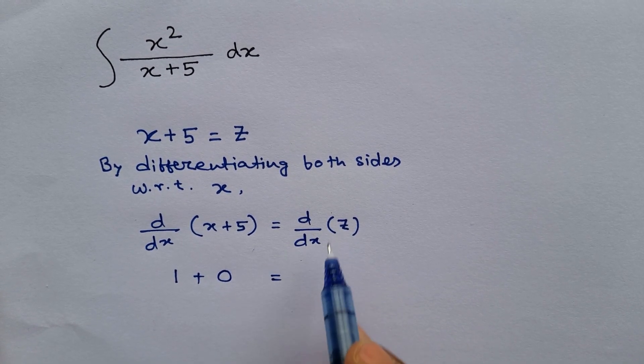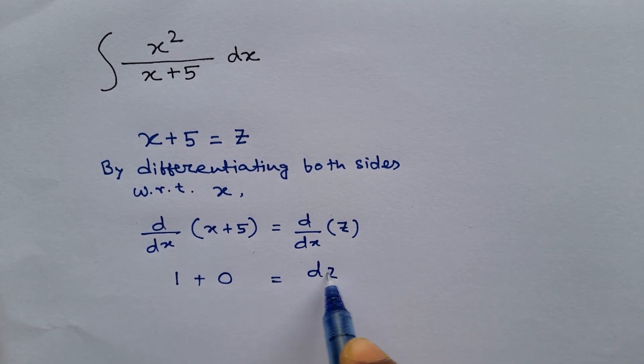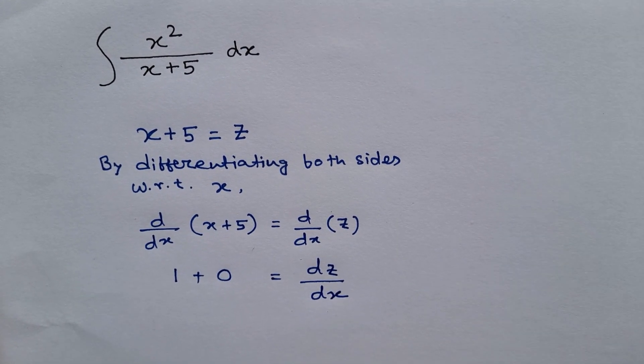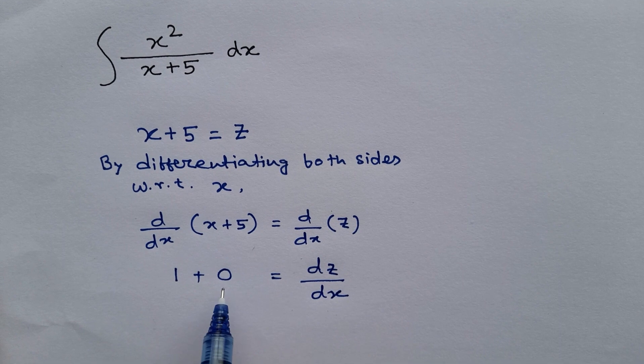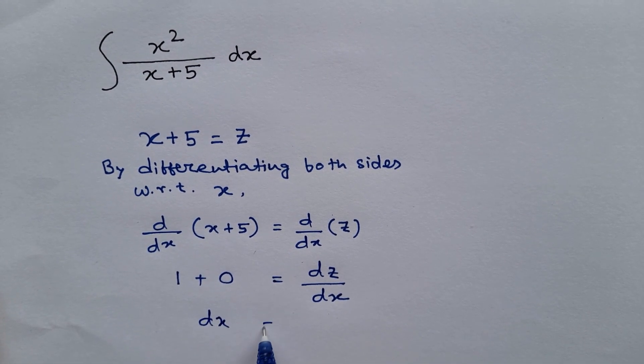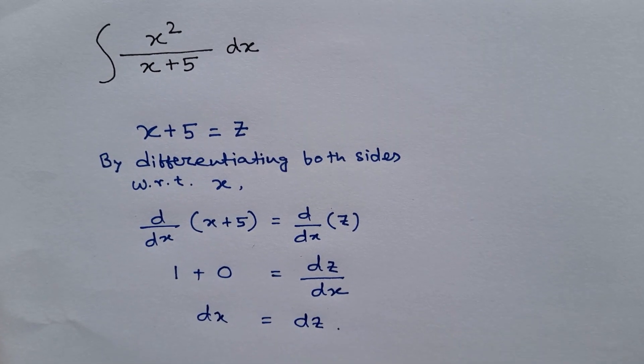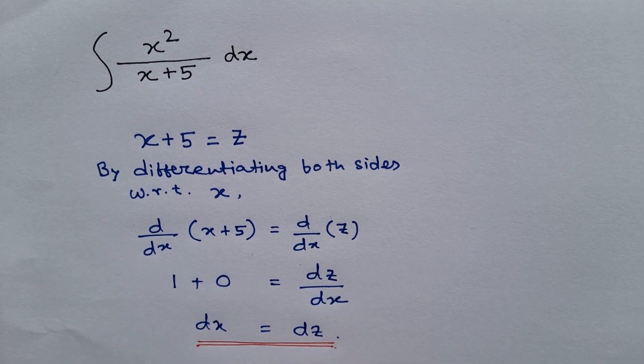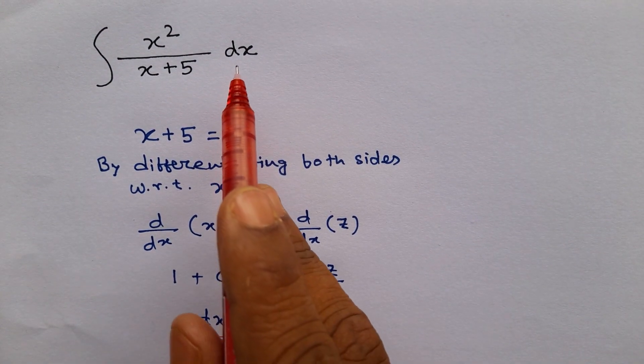And here it will be dz by dx. So dz by dx equals 1. So dx equals dz. These we will now substitute into the problem.